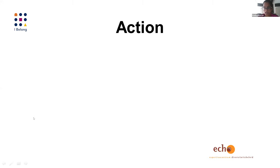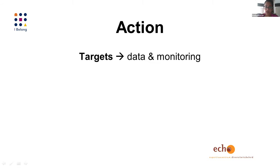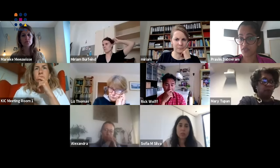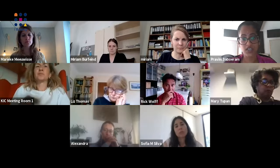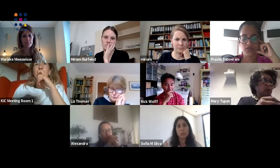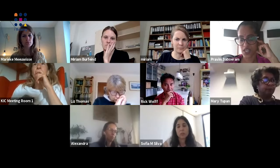Finally, on action: targets are important when you talk about a color-brave approach. Data and monitoring matter — when we talk about inclusion we often talk about quotas, ensuring you are a reflection of society. Safe space is very important, specifically in relation to sense of belonging. The social movement is saying: we don't feel safe in the streets, we don't feel safe jogging or on our way to family and being stopped by the police.